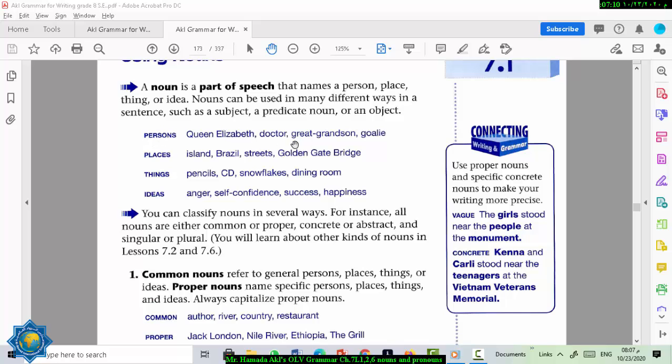For example, here, nouns can be names of people, like these ones, Queen Elizabeth, doctor, and so on. They can be names of places, names of things, or names of ideas.